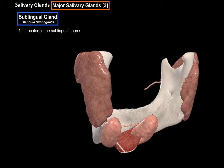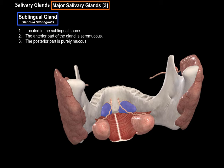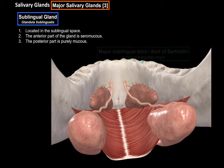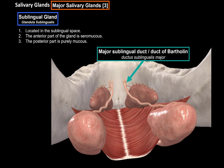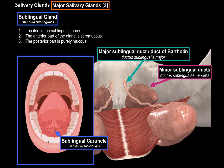Then we have the sublingual gland, located in the sublingual space. The anterior part of the gland is seromucus, and the posterior part is purely mucus. The sublingual gland is special in that it has two types of ducts: the major sublingual duct, or duct of Bartholin, which joins with the submandibular duct to open into the sublingual caruncle; and the minor sublingual ducts, which open as small holes within the sublingual folds.